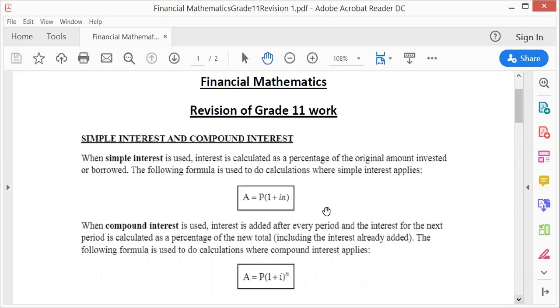Simple interest is calculated as a percentage of the original amount invested or borrowed. You either invest or you can borrow - if you invest you will get money back, if you borrow you pay money back. The formula is A = P(1 + in).